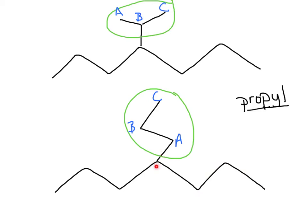And what I see in the molecule here on the bottom is that the base chain of the molecule attaches to the propyl group at carbon A. So it's at the end of that three carbon chain. And when that's the case, we actually call this a propyl group.